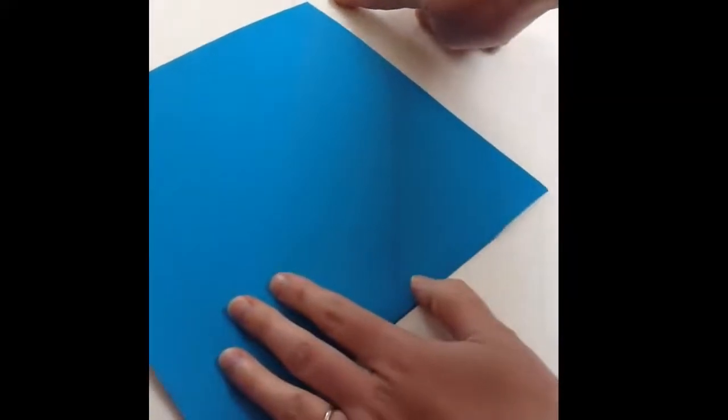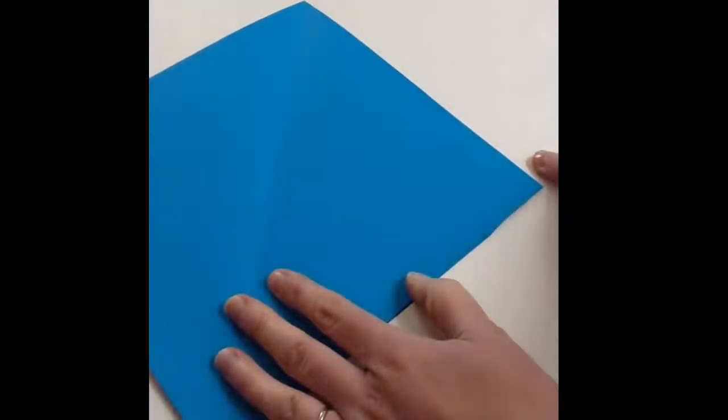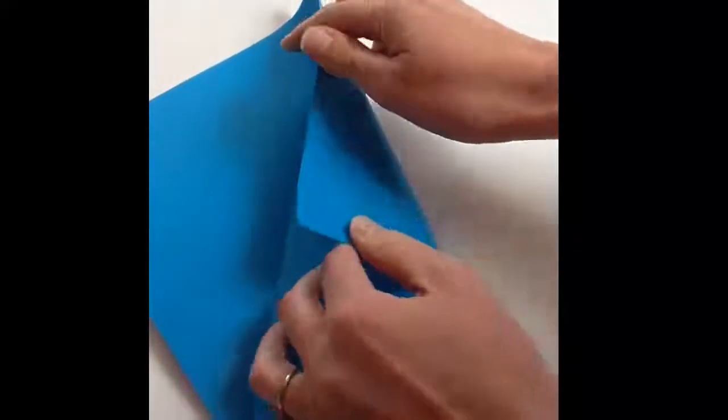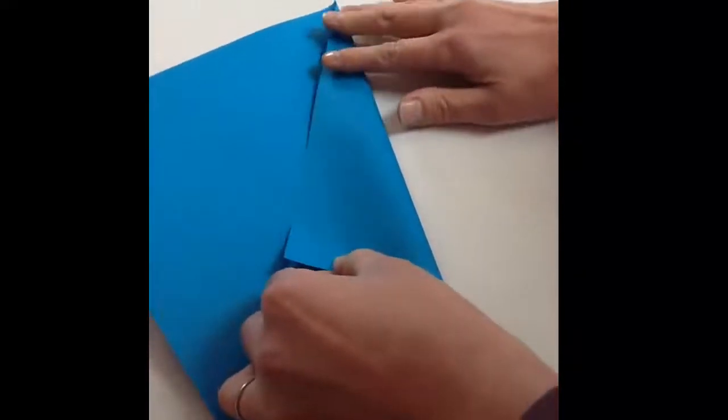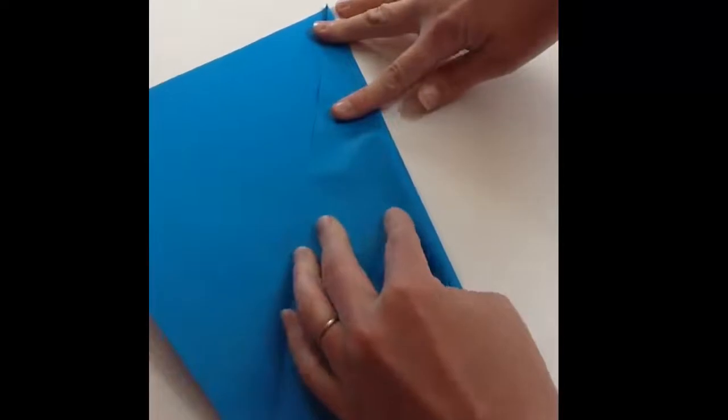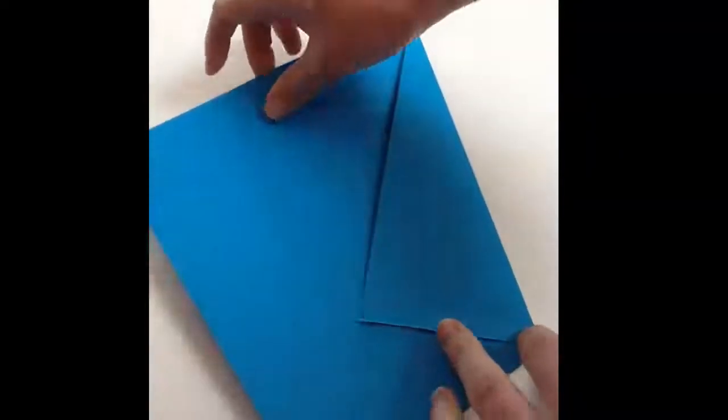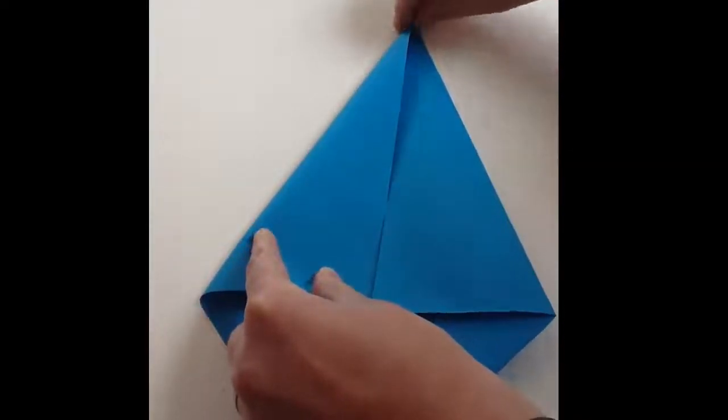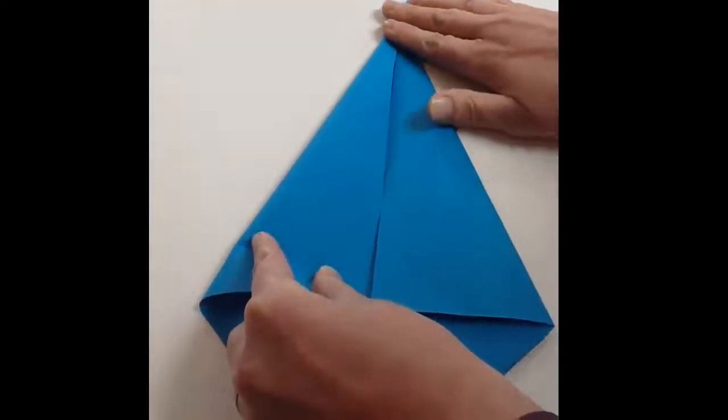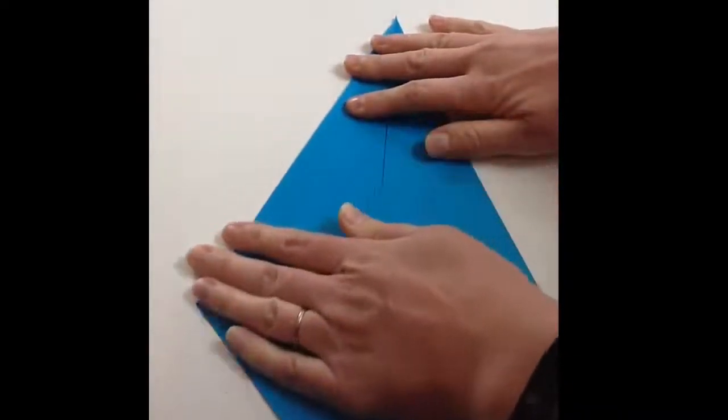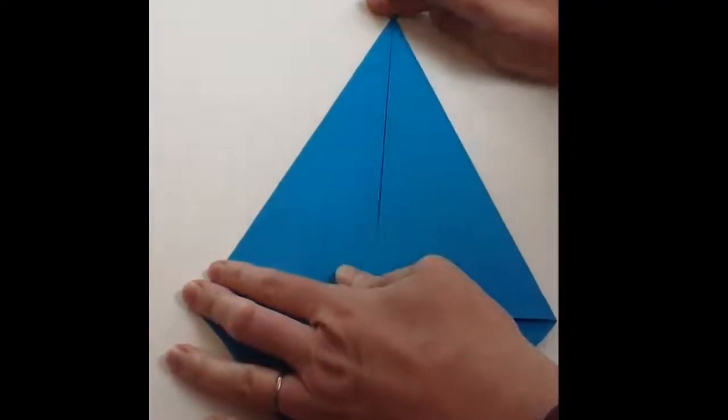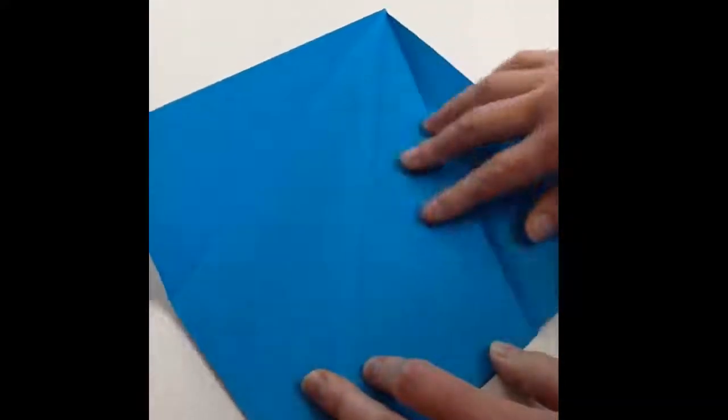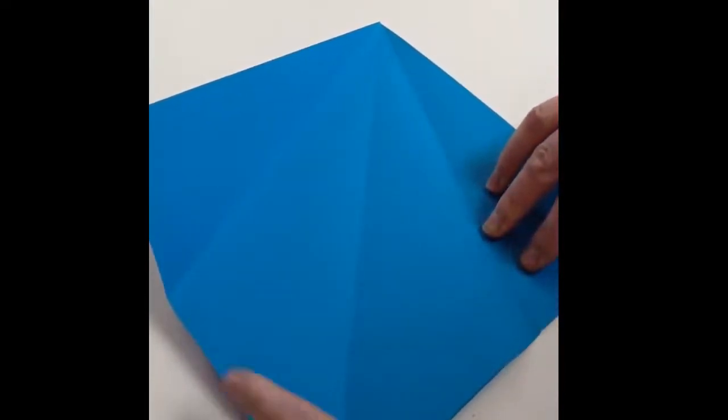Now, you're going to take the top right edge here and fold that in so it's along that line in the middle. Do that on both sides, a bit like you're making a paper aeroplane. Make sure those folds are nicely pressed down. Then you open it up again, and you do the same thing for the bottom edges.